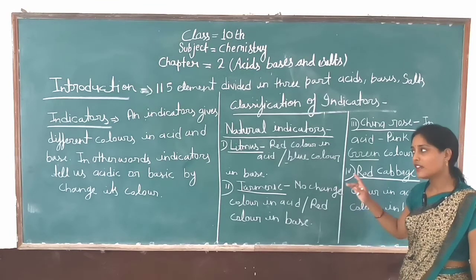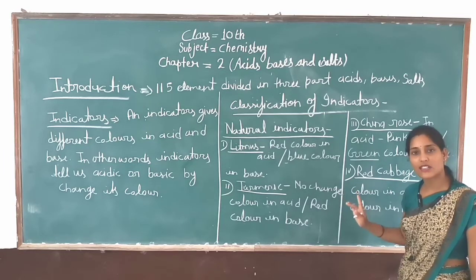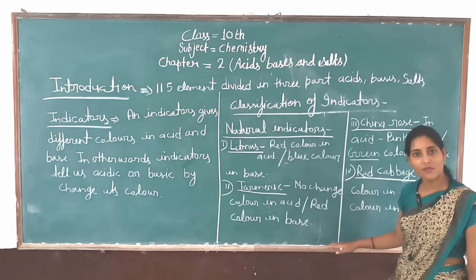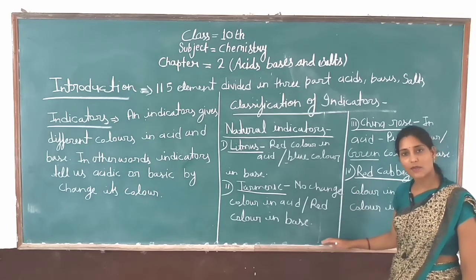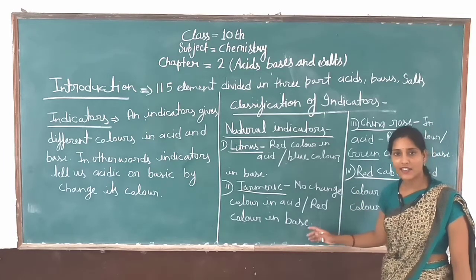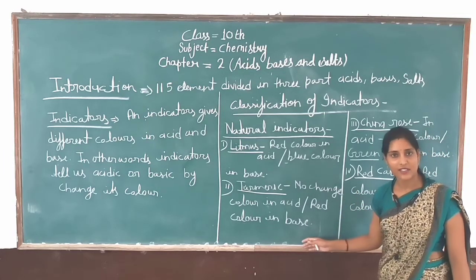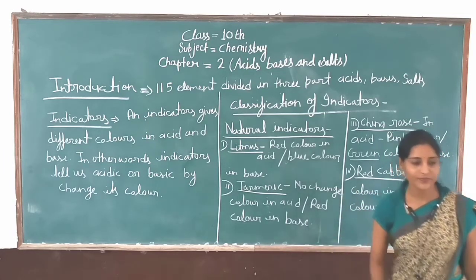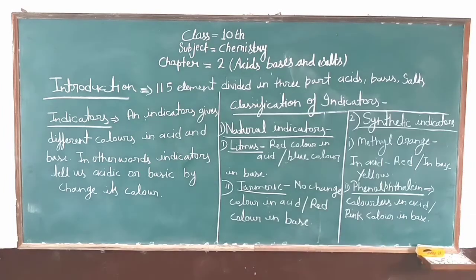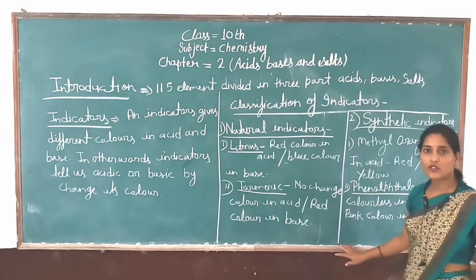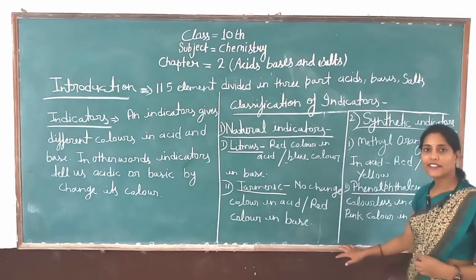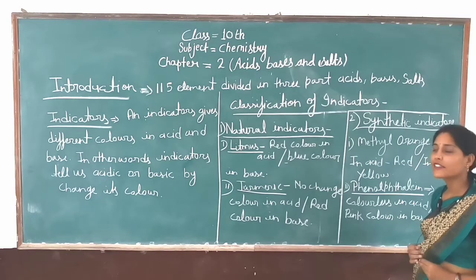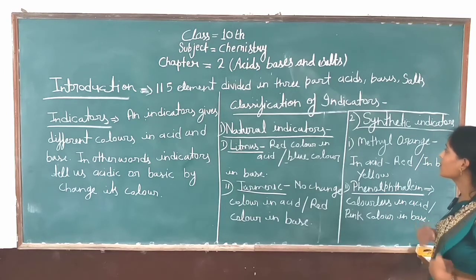So we have seen the natural indicators clearly. Now we have the next indicator. We have natural indicators — that is clear. Now we have another type coming next.